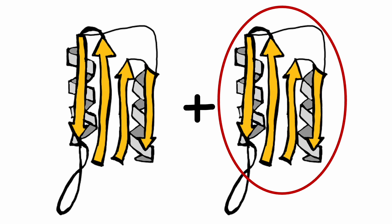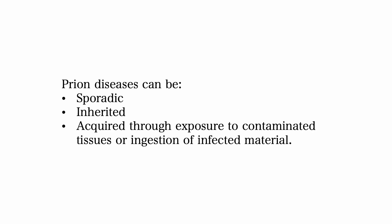Therefore, it leads to the accumulation of these proteins in the brain, forming aggregates called amyloid plaques. The prion disease can be sporadic, inherited, or acquired through exposure to contaminated tissues or ingestion of infected materials.